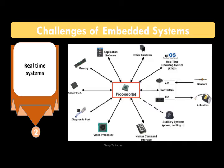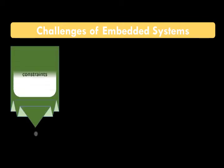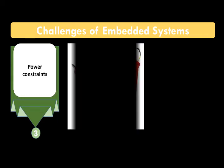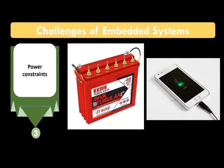The third important challenge is power constraint, which is becoming very important. For example, if you use your phone for two hours, you don't want it to need 22 hours of charging. We need to have either an inbuilt battery or an external supply. For mobile phones, battery life varies between 8 to 10 hours depending on the applications. Depending upon the application, we must design with power constraints in mind.